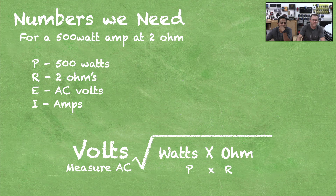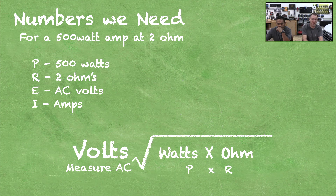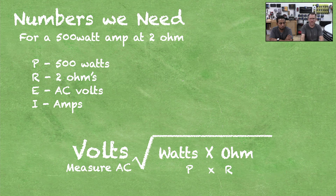Keep in mind when doing this: you have to assume the amplifier actually produces the power they claim. So if it says it's a 500-watt amp and it has a 35-amp fuse on it, rest assured it's probably not making 500 watts. Also keep in mind that amplifiers aren't always as efficient as they say they are. But this is a good way to do it — it'll get you at least in the ballpark of how to set up your gains.